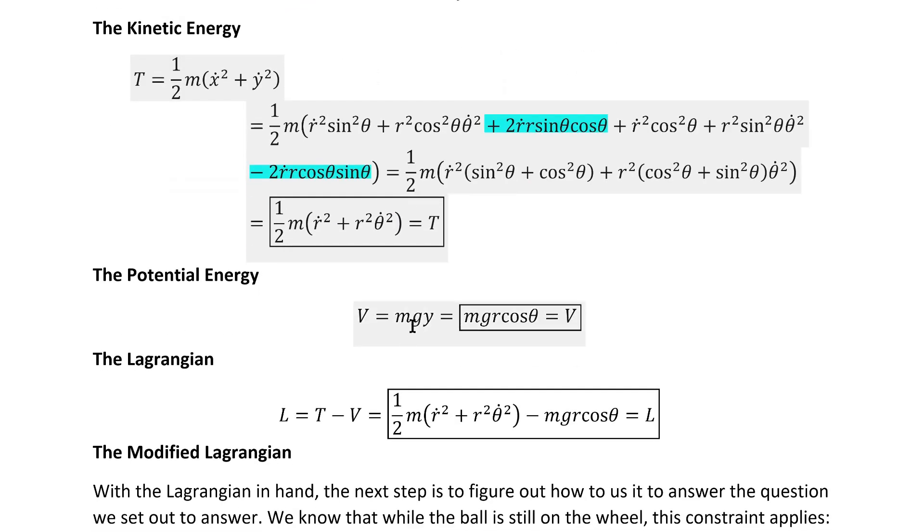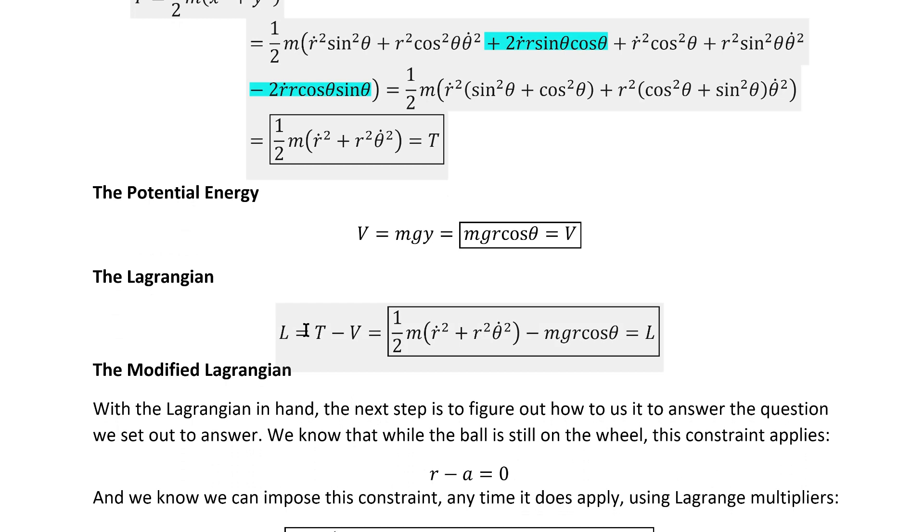The potential energy is quite easy. It's just mgy, as is usual in gravitational systems. And we've already used trigonometry to calculate y, so we can just plug that in. Then the usual Lagrangian is T minus V, giving us this result.